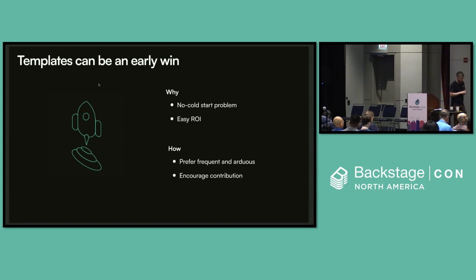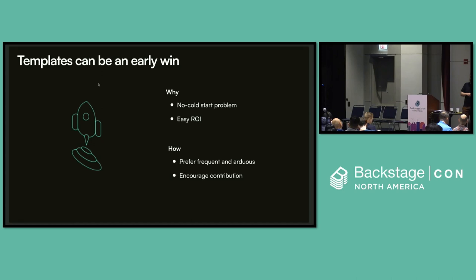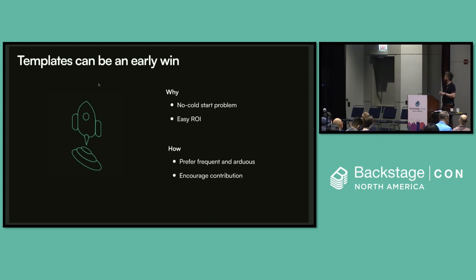Not all companies had equal success with the scaffolder. The ones who reported the most success tried to automate frequently run tasks. If a job is only run once a year, the steps have probably changed by the time you run it again, so there's not much value in automating that. Things that happen very frequently tend to stay up to date more easily. Obviously more arduous tasks are also better to automate — they just cost more to follow all the steps and are a good starting point.